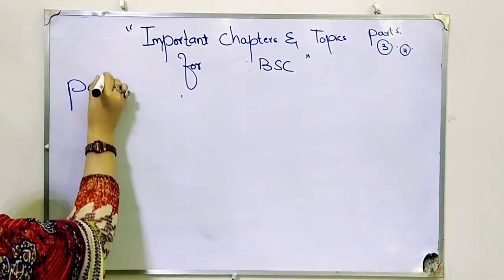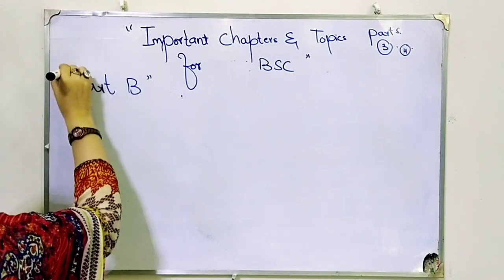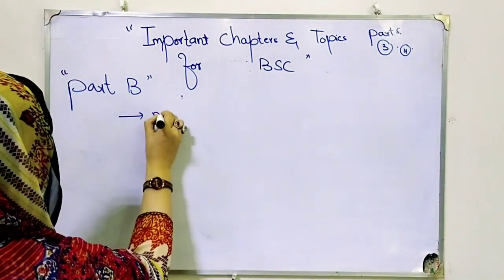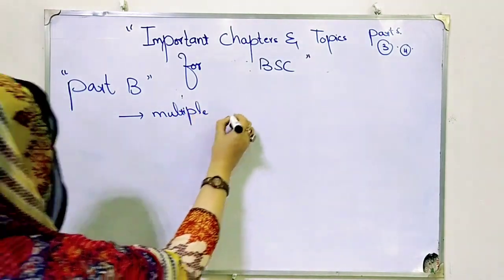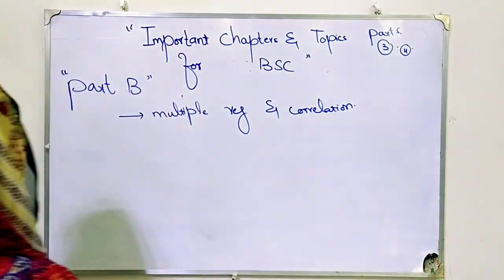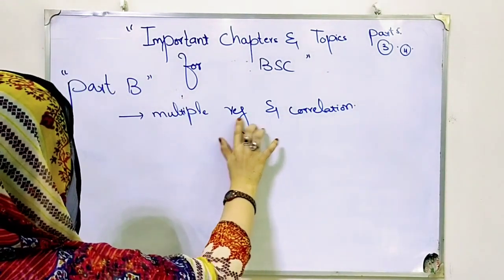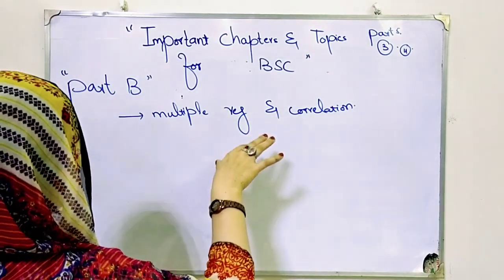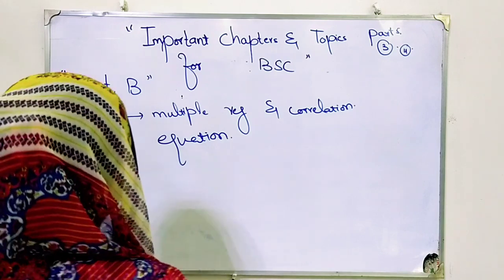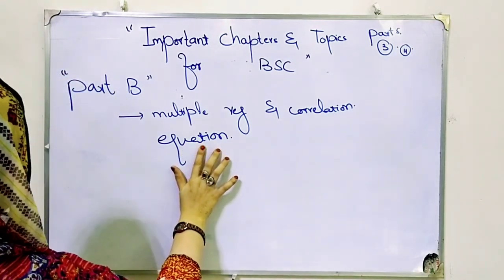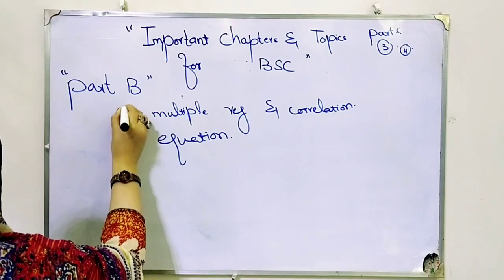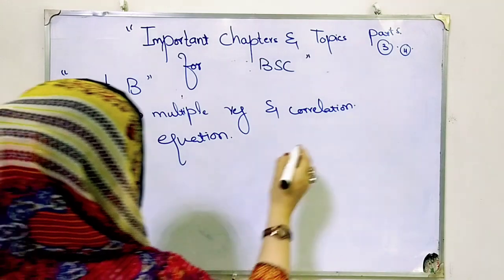Now for Part B — Part B is difficult for students; the chapters are critical. The first chapter for Part B is Multiple Regression and Correlation — it is a short and easy chapter. It is available in Part 1 of your book. Students are asked questions on regression, correlation, or standard error. Questions come from multiple regression and correlation — equations with different types and formulas. You have to remember these formulas. One question comes from here in Part B.